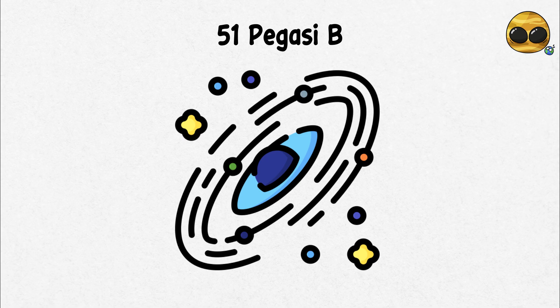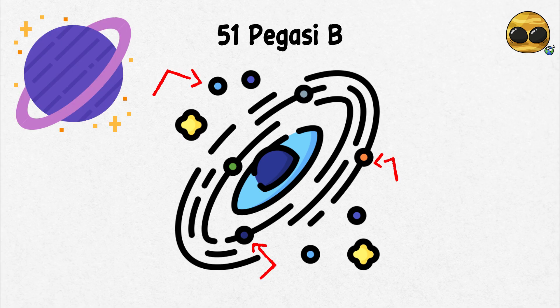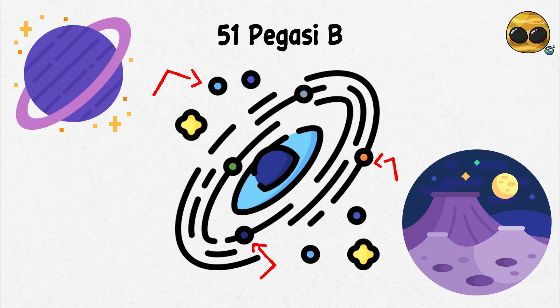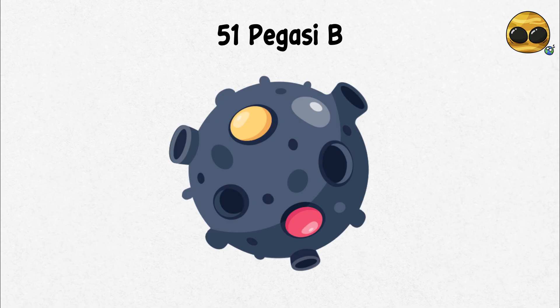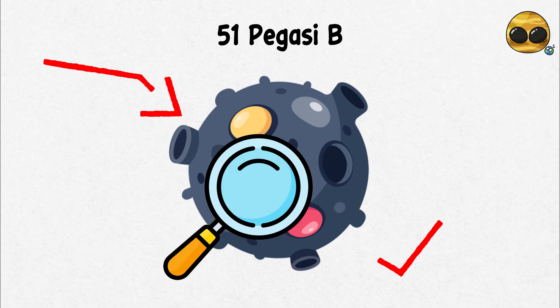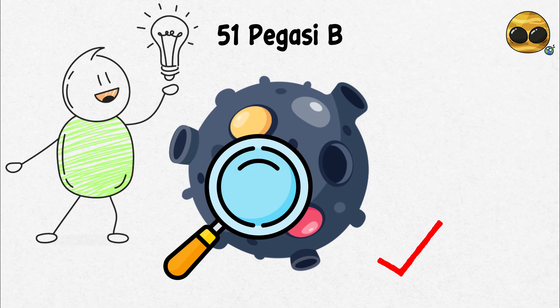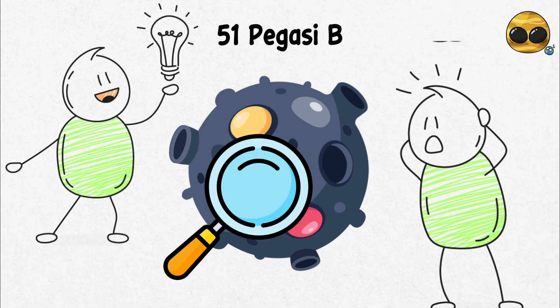This discovery showed that there could be countless planets out there waiting to be found, each housing its own unique characteristics and even the possibility of life. 51 Pegasi b marked the beginning of an era of exoplanetary exploration, inspiring scientists and capturing the imagination of people around the world.